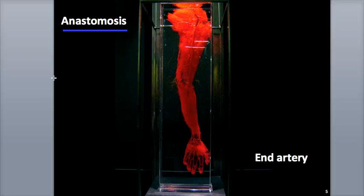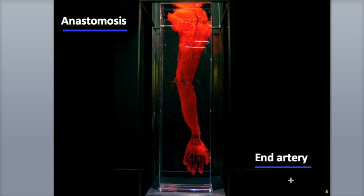Not all arteries form anastomoses. Some end directly at an organ without branching — these are called end arteries. If blood flow is blocked in one of these arteries, the part of the organ on the receiving end of that blood flow is at risk of dying through necrosis.